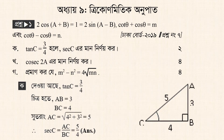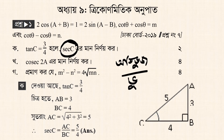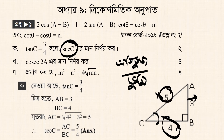sec theta equals 5 by 4. We know that sec theta equals hypotenuse over base. The hypotenuse is 5 and the base is 4, so sec theta equals 5 by 4.